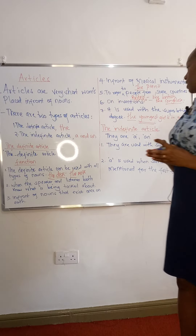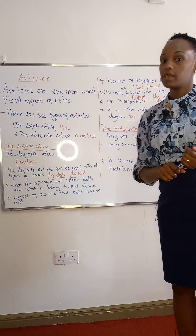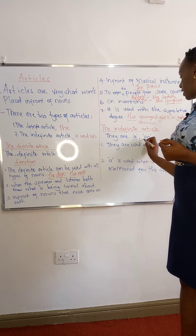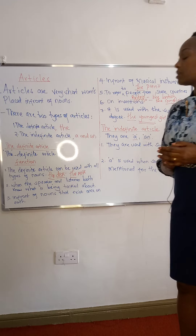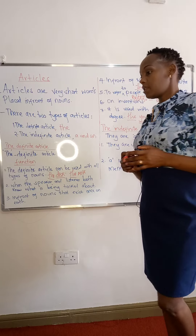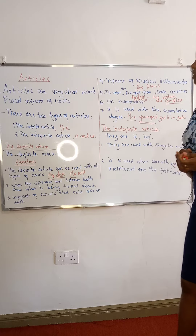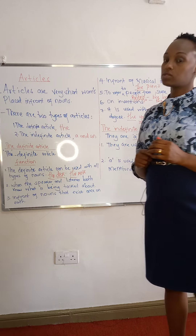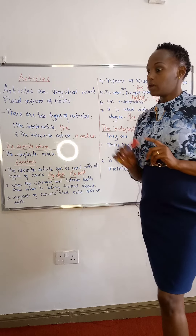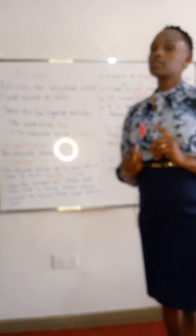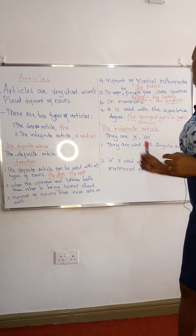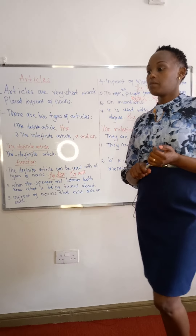Let us now look at the indefinite article. The indefinite articles are two: we have 'a' and 'an', and they are used mostly with singular nouns. You can say 'a pen', 'an apple', 'an egg'. You will notice that 'pen' is singular, so we have used 'a' as the indefinite article. 'Apple' is one, so it is singular, and so we say 'an apple'.